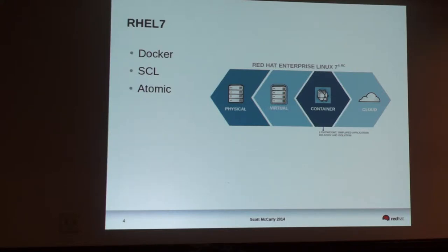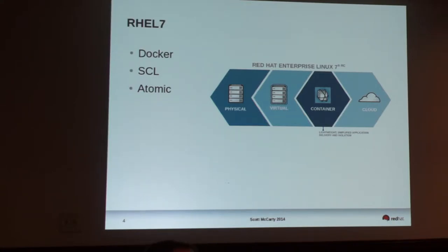With RHEL Atomic, what Red Hat's trying to do is target the mid-range development - mobile sites, micro sites, marketing sites - a lot of those shorter-term web apps that are developed, good for maybe two to five years. There's this middle ground where RHEL is supported for almost 13 years, depending on how you look at it, 10 to 13 years.